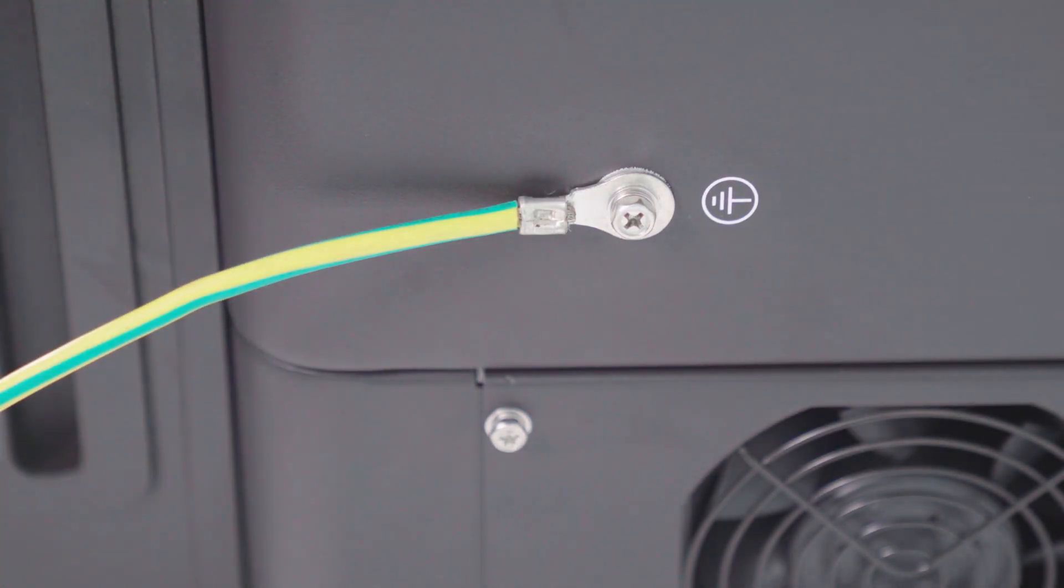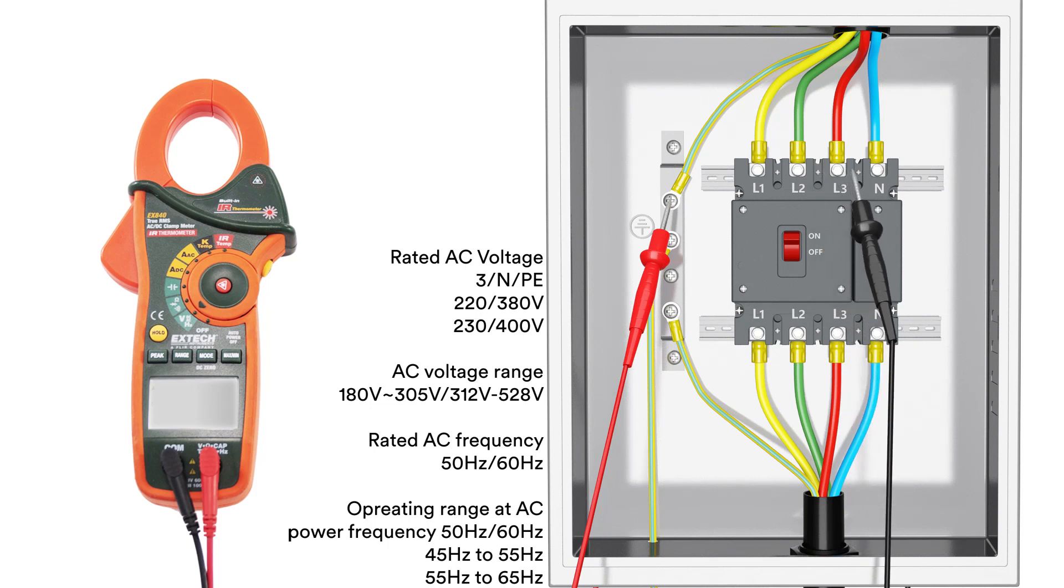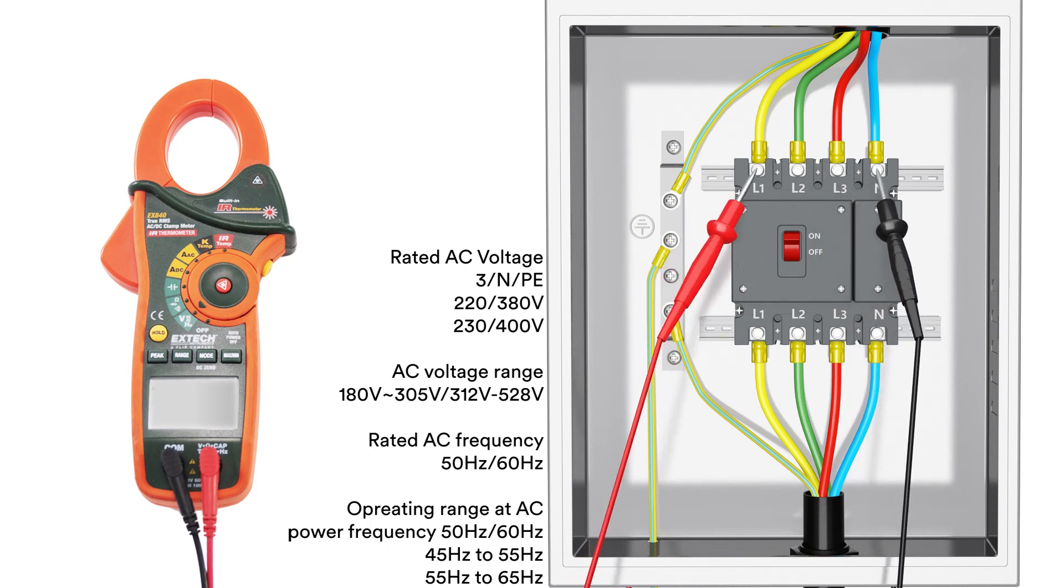Make sure that the inverter's exposed metal surface has a ground connection. Check the PE connection with a multimeter. Check the grid voltage. Check that the grid voltage at the point of connection of the inverter complies with the permitted value.